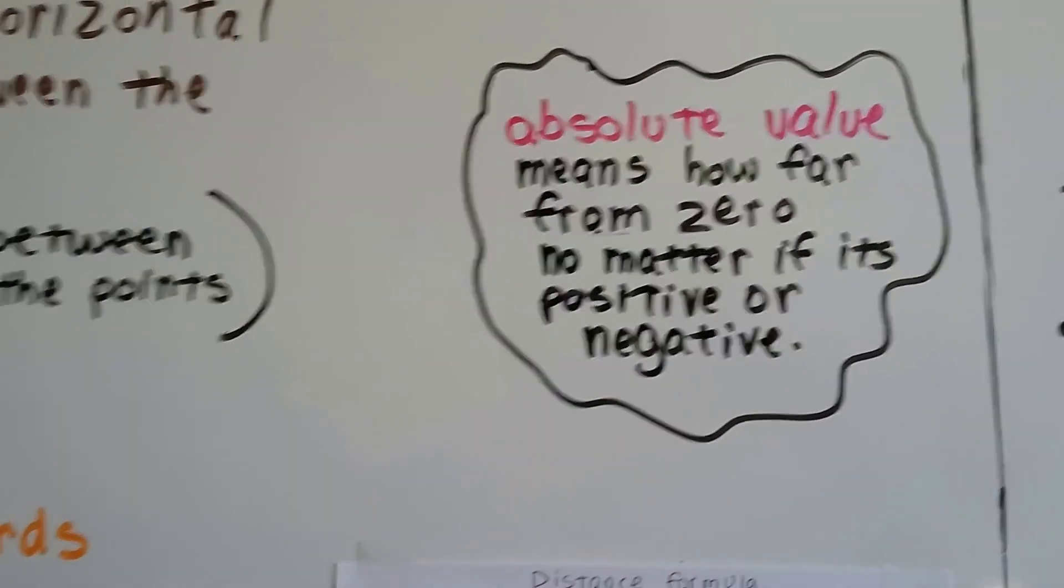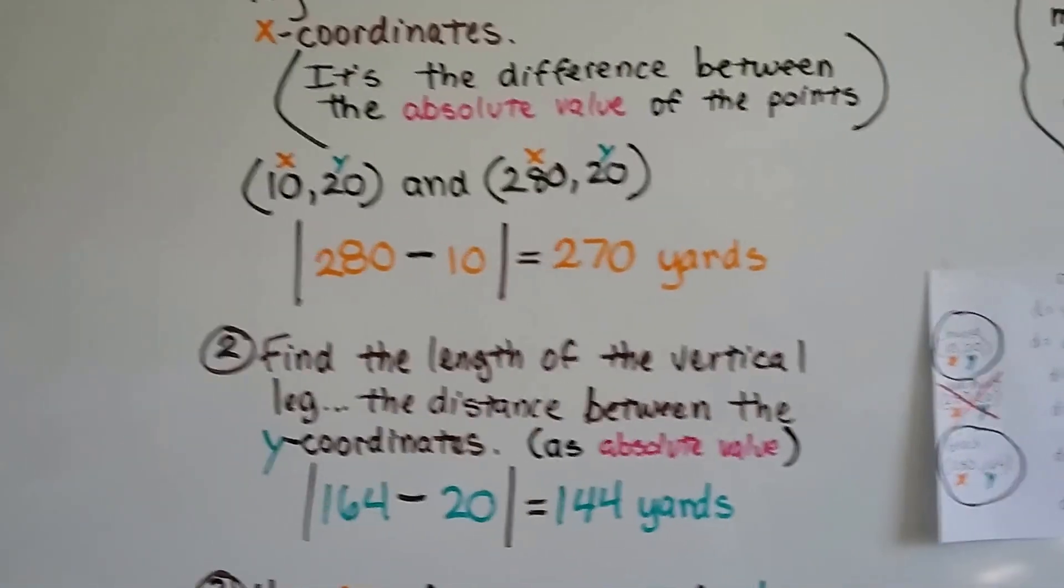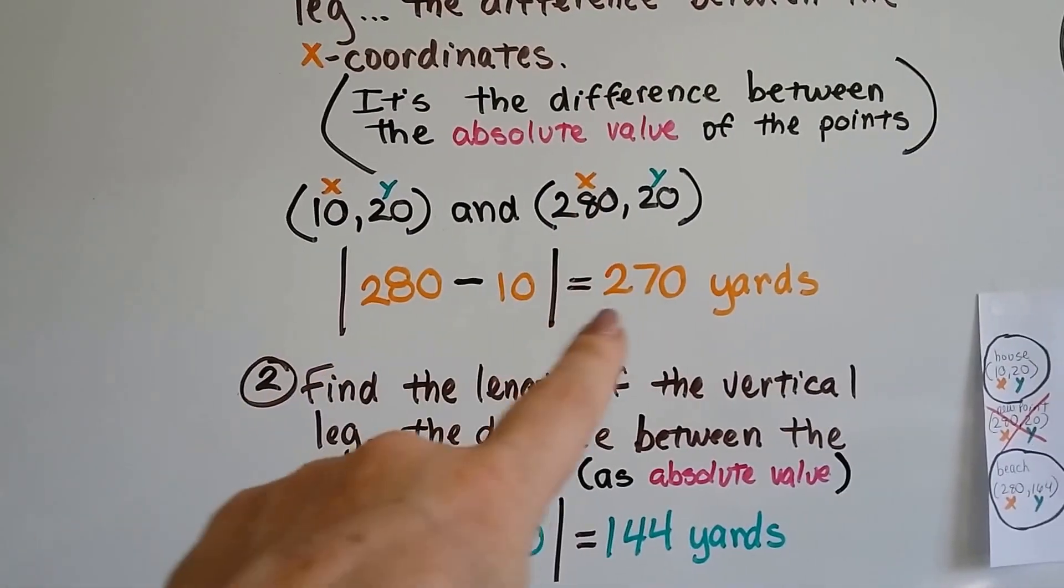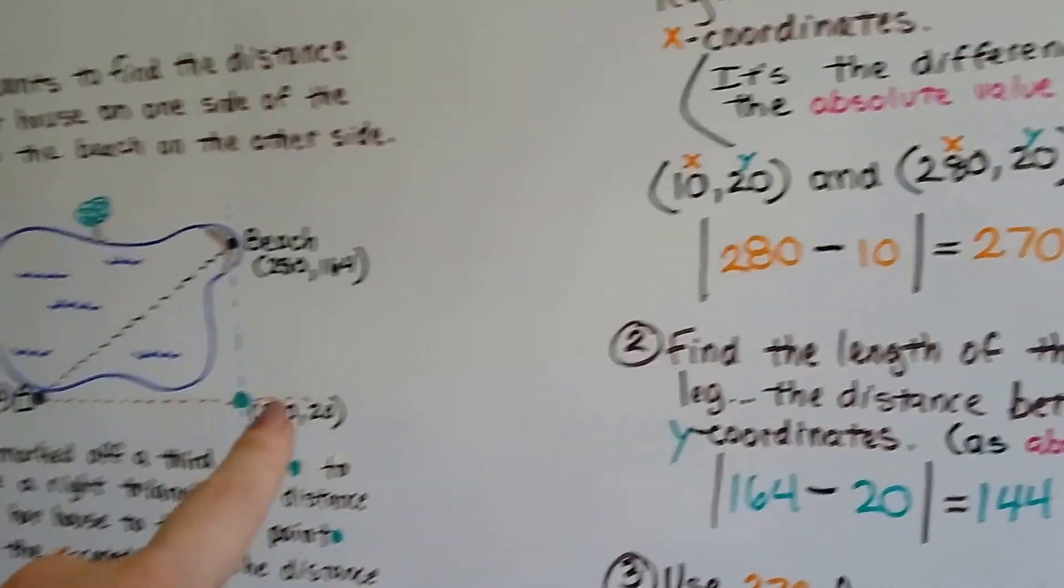It means how far the number is from zero, and it doesn't matter if it's negative or positive. We don't put the negative or positive sign. So the difference between 10 and 280 is 270 yards. So that is the length of our x.